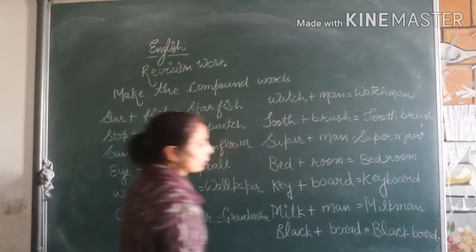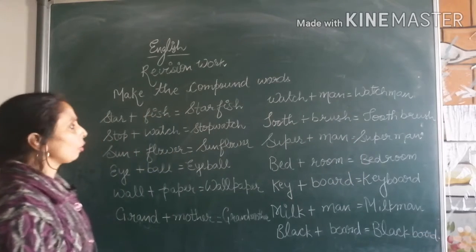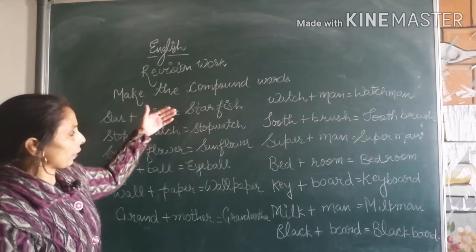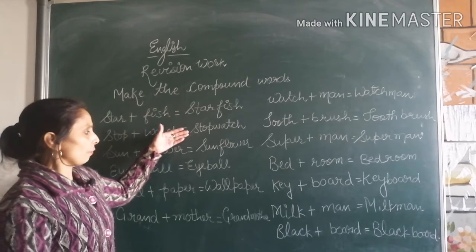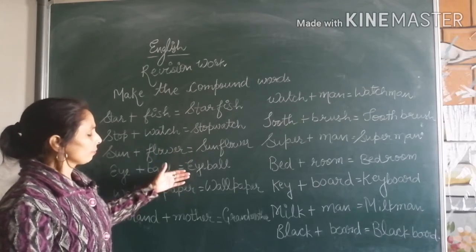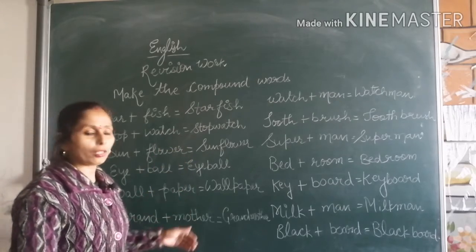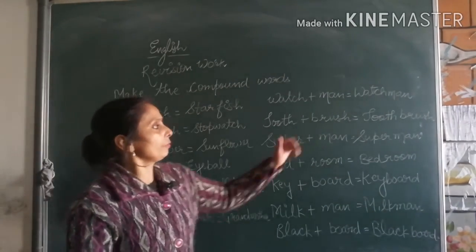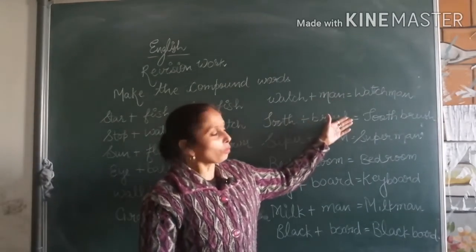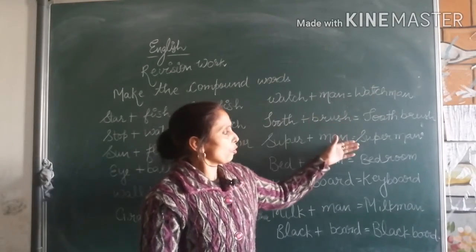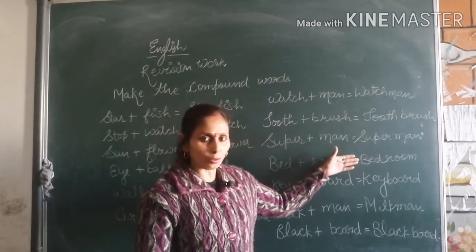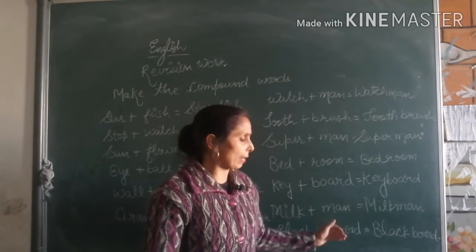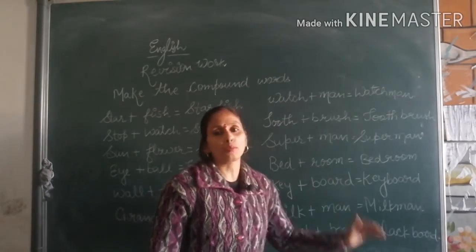By this time you have already completed your board. You get the new words: starfish, stopwatch, sunflower, eyeball, wallpaper, grandmother, watchman, toothbrush, superman, bedroom, milkman, and blackboard.